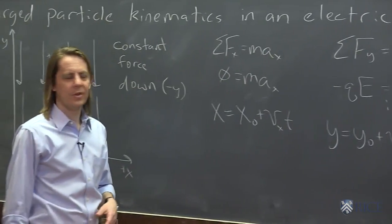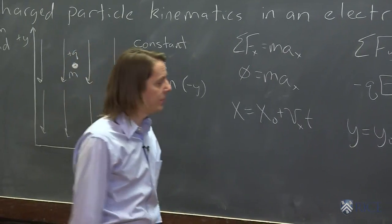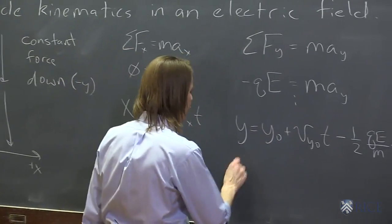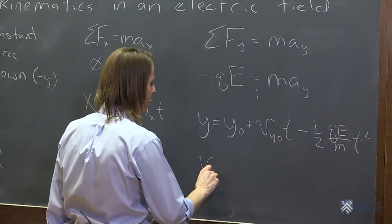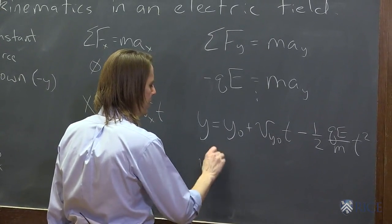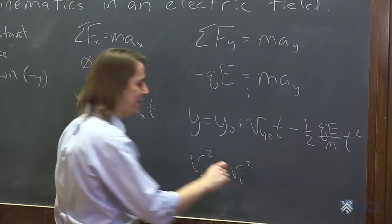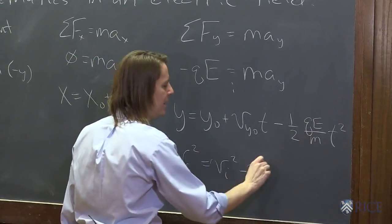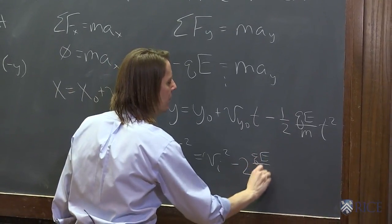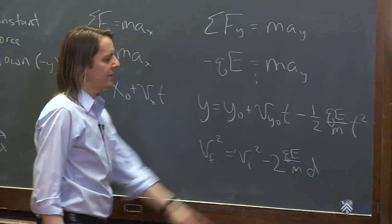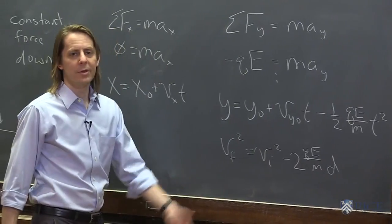Very similar to the kinematics you did with gravity. And you could also, all the others would still apply, right? So v final squared would be v initial squared plus 2ad. But a is negative, so it'd be minus 2 qE over m d. That's if you accelerated for some distance in the y.